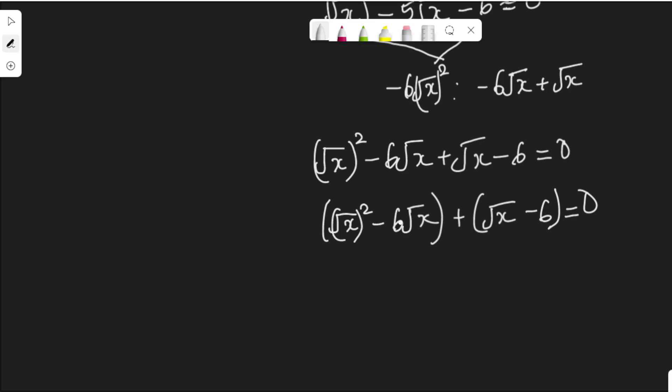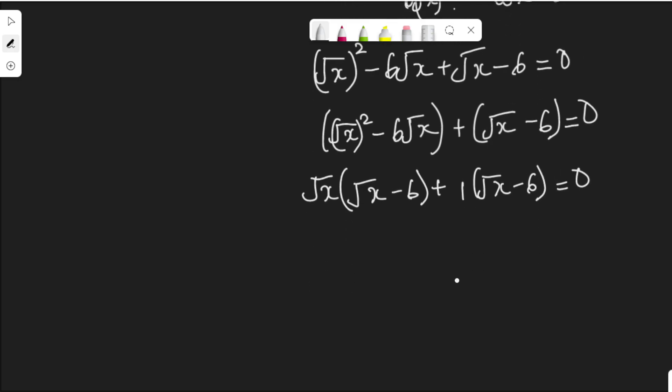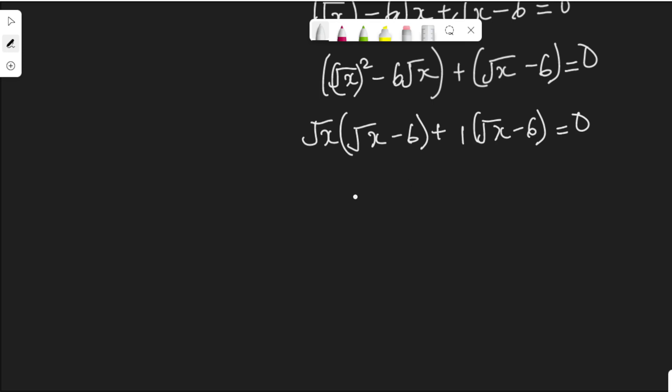In the first one I have root s squared minus 6 root s, group them together. Plus I have root s minus 6 equal to zero. In the first bracket, root s is common, so that is the common factor. I will bring it out: root s into root s minus 6 plus, in the second bracket, 1 is common, root s minus 6 equal to zero. And root s minus 6 is a common factor, so we pick it as root s minus 6. They will group this and this together: root s plus 1 is equal to zero.